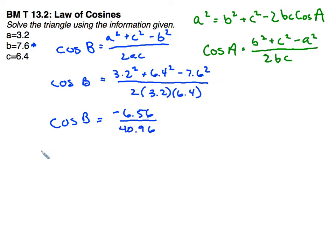So then to inverse to get angle b, negative 6.56 over 40.96, I end up getting angle b as 99.2 degrees.